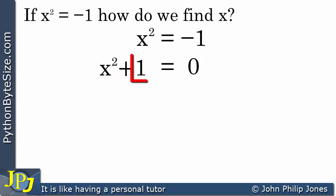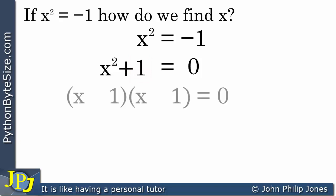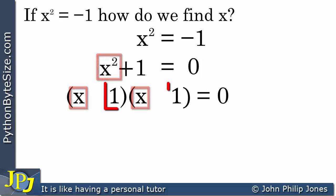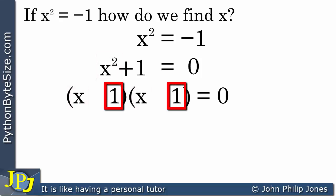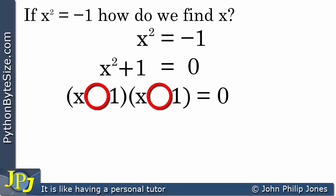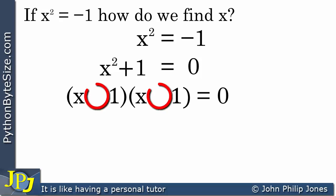What two numbers can I multiply together to give me 1? Obviously 1 and 1. So I write down brackets with x and x, and 1 and 1. When multiplied together they give x squared and 1 respectively. But I haven't yet decided what the sign is going to be in front of the 1s. There are four possible combinations for the signs in these two positions: both positive, both negative, first negative and second positive, or first positive and second negative.